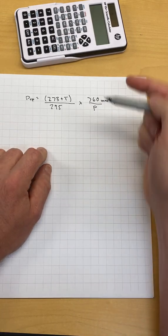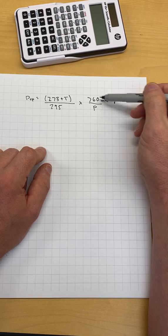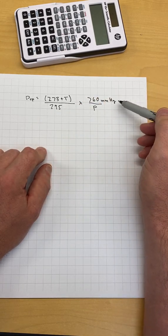That's kind of a hidden thing in a lot of this: this temperature has to be in Celsius, and this pressure, at least the way this one's written, has to be in millimeters of mercury.